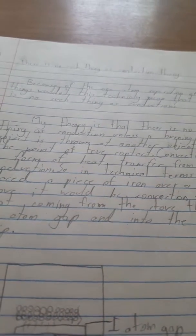Convection is a form of heat transfer from non-conduction. So, in technical terms, if I placed a piece of iron over a hot stove, it would be convection from the heat coming from the stove through the one atom gap and into the iron strip.